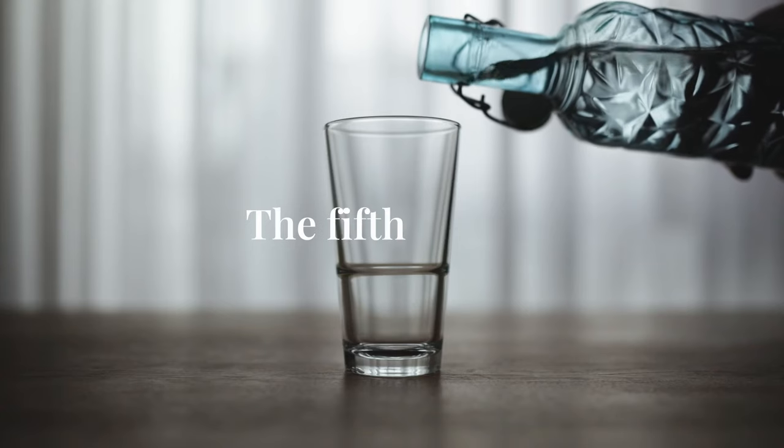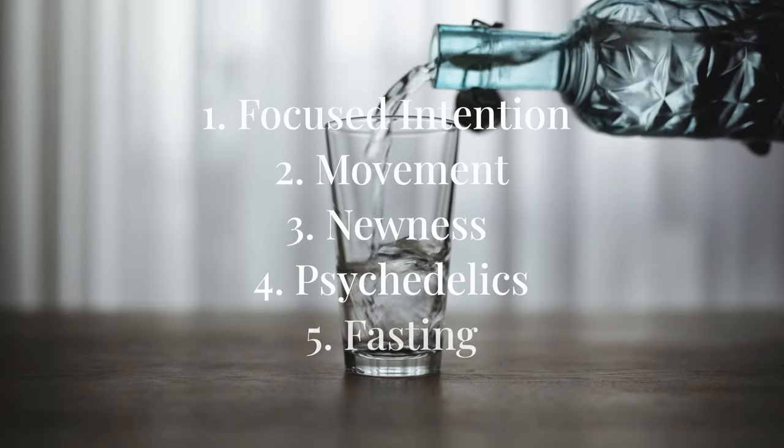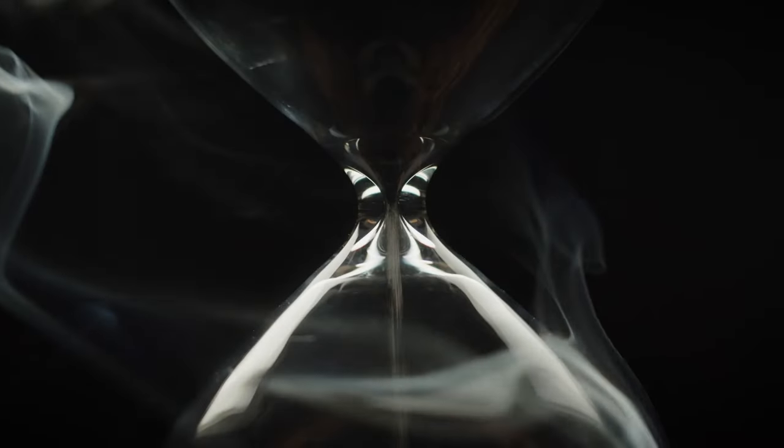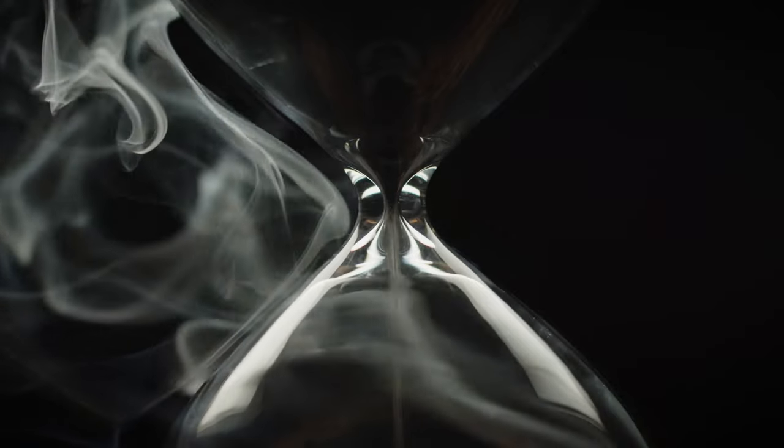The fifth way is through fasting. Intermittent fasting, for example, is when you constrict the time window of your eating — you would have no calories outside of a certain window. Say you'd eat all your meals within eight hours, and then fast for 16 hours of the day.